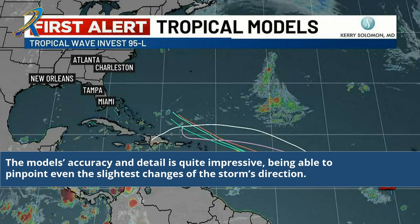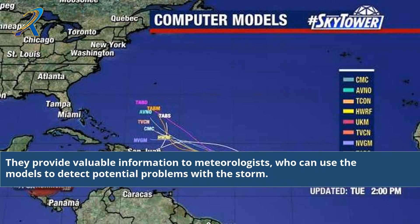The models' accuracy and detail is quite impressive, being able to pinpoint even the slightest changes of the storm's direction. They provide valuable information to meteorologists, who can use the models to detect potential problems with the storm.